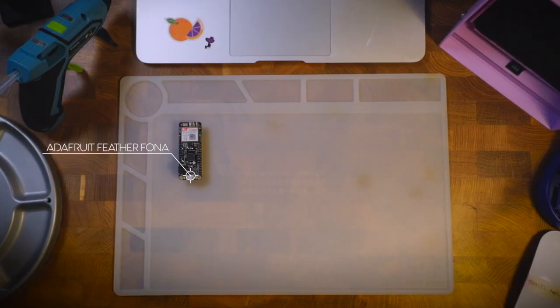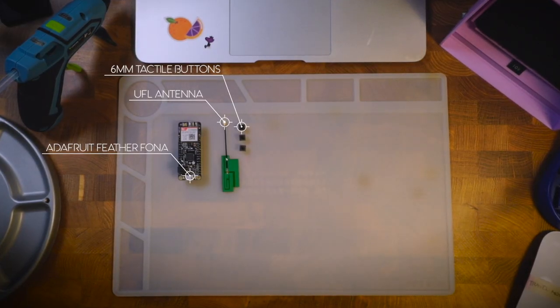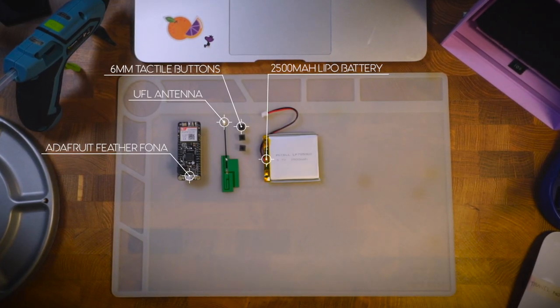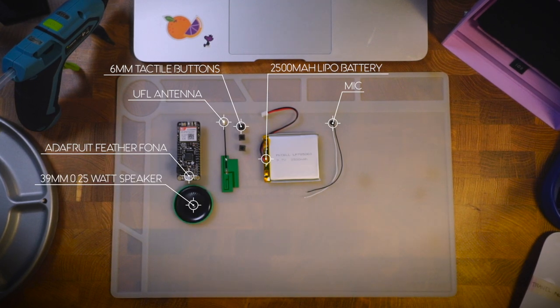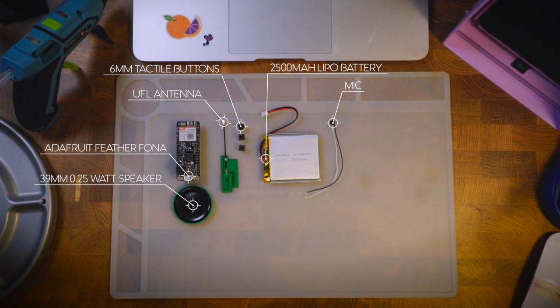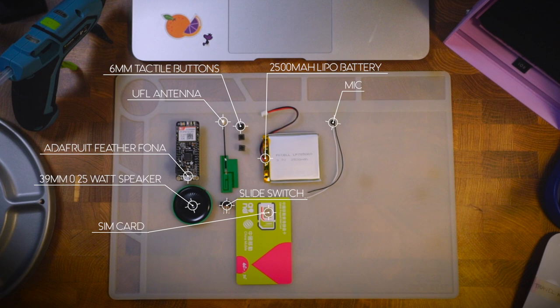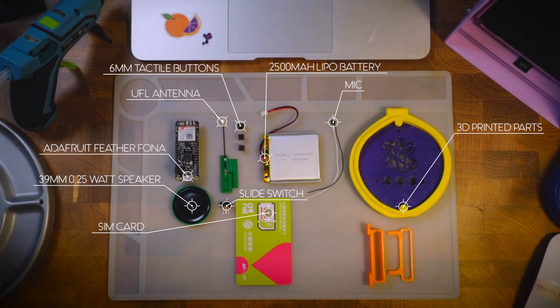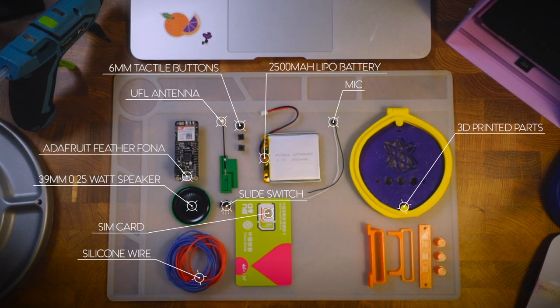Some things you'll need are a UFO antenna, 6mm tactile buttons, a LiPo battery, a mic, 39mm 0.25 watt speaker, a slide switch, 2G SIM card, 3D printed frame, silicone wire, a breadboard, and most importantly, a coconut. Any other bits I've forgotten will be listed down in the description. So, let's begin!